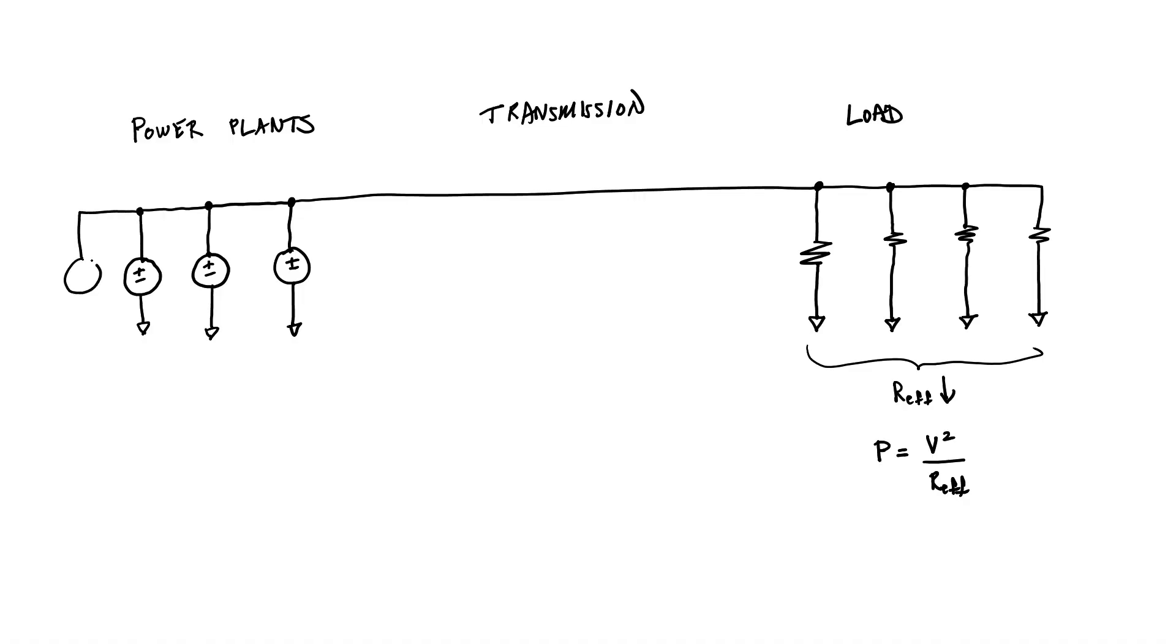But what about the power plants? They have more or less a fixed amount of power output each. So if I'm increasing the load or effectively making the load resistance reduced, then I have to have more power coming into the network at the power plant side. Power plants aren't really perfect voltage sources. They're more like power sources.